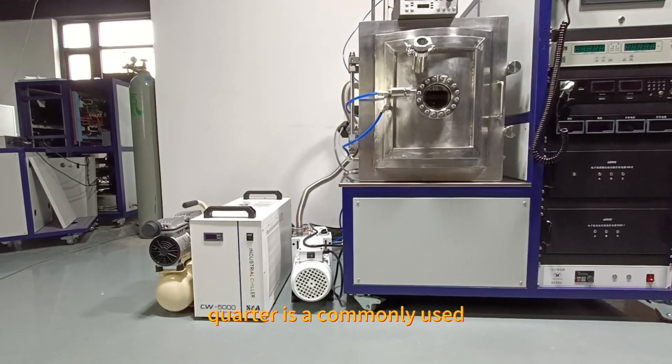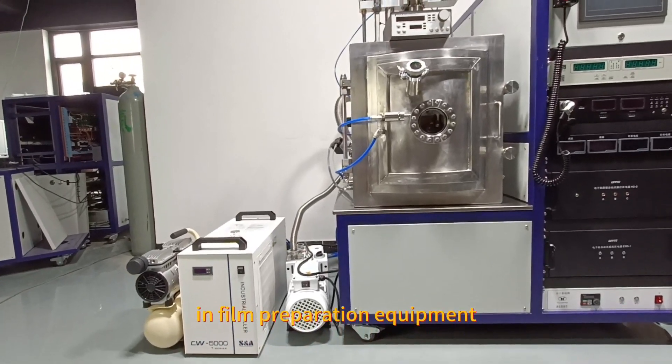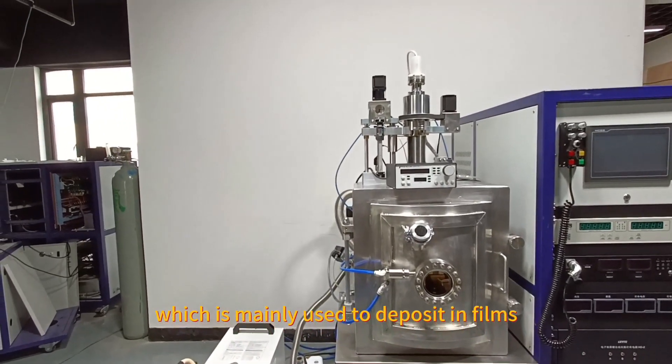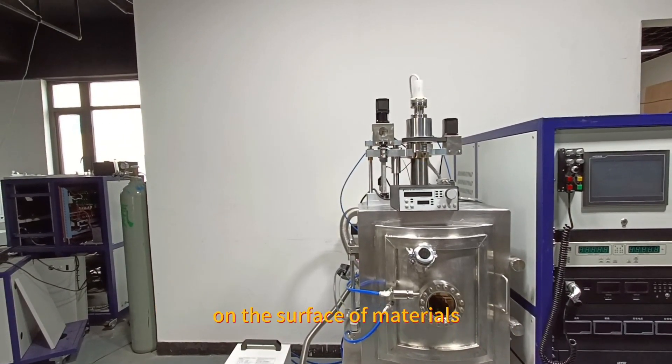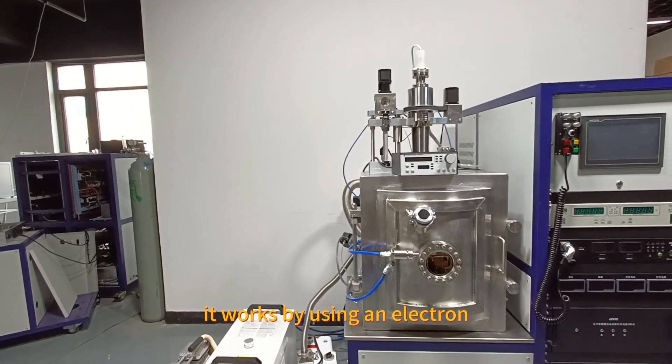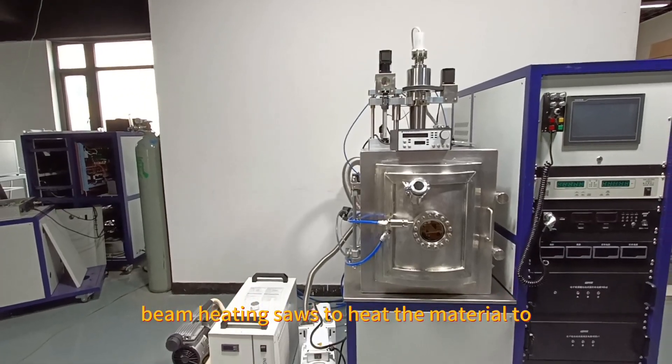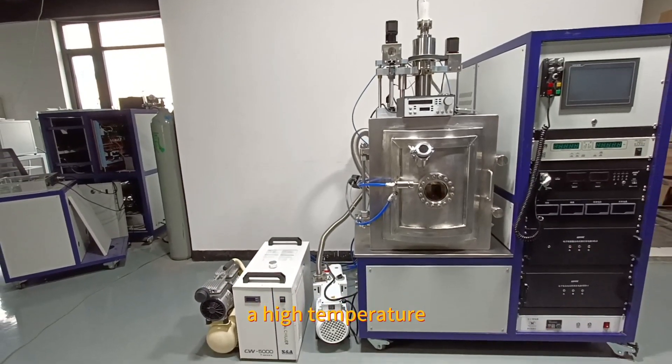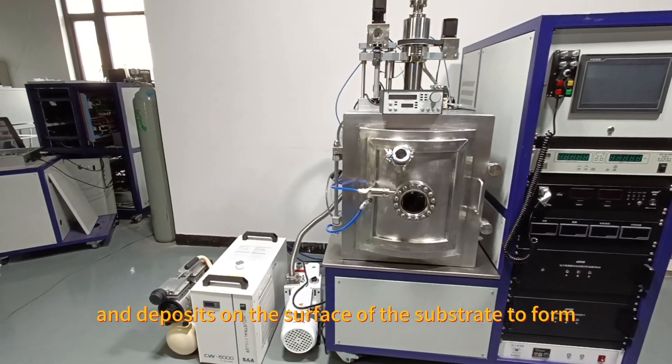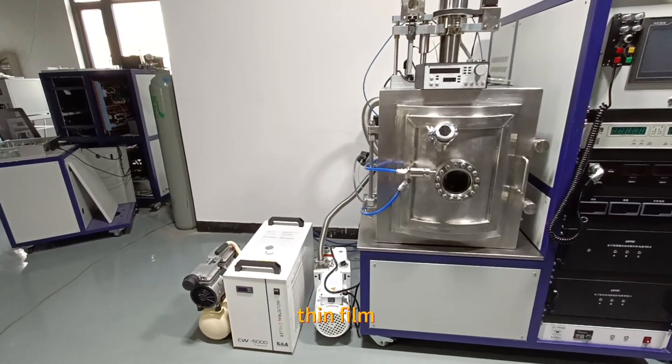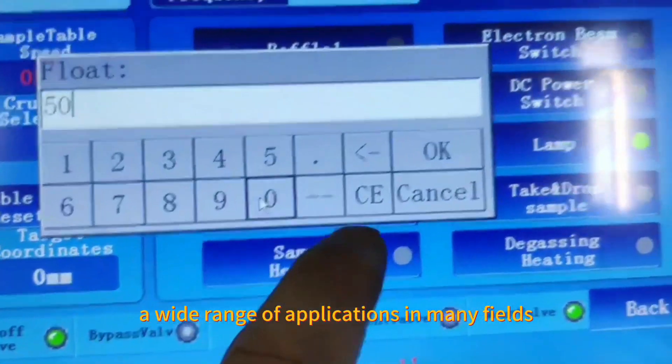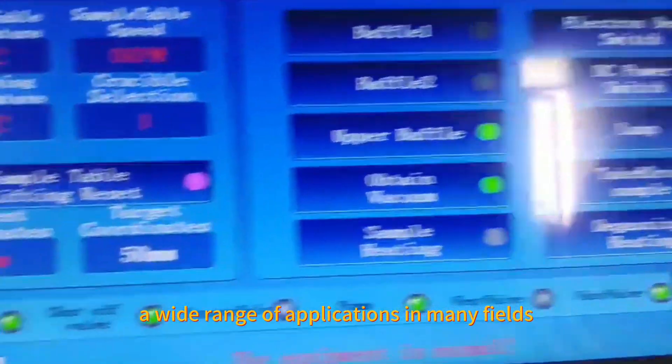Electron beam evaporation coater is a commonly used thin film preparation equipment, which is mainly used to deposit thin films on the surface of materials. It works by using an electron beam heating source to heat the material to a high temperature so that it evaporates and deposits on the surface of the substrate to form a thin film. Electron beam evaporation coating instruments have a wide range of applications in many fields.